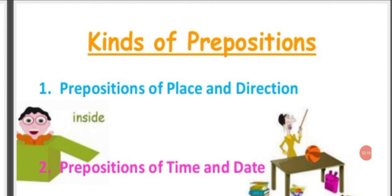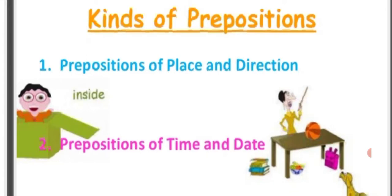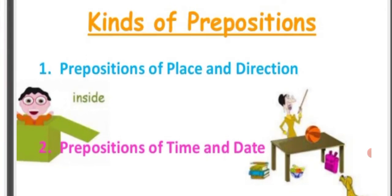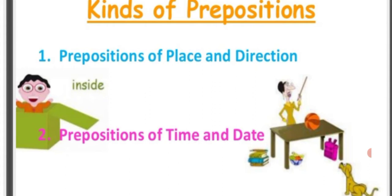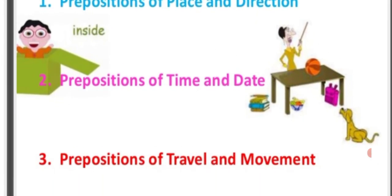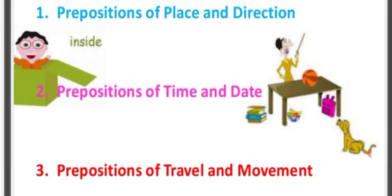Now we will do the types or kinds of prepositions. Number one is prepositions of place and direction. Number two is prepositions of time and date. Number three is prepositions of travel and movement.